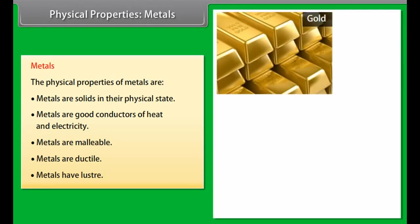Lustre. Metals reflect light from their shiny surface. They can also be polished. For example, gold, silver and copper are metals with a shiny surface and can be polished.